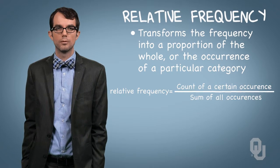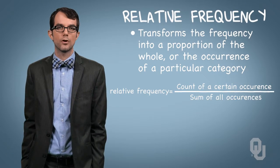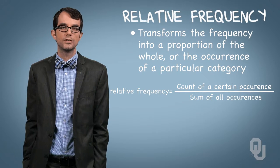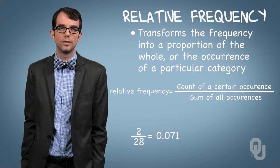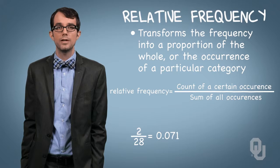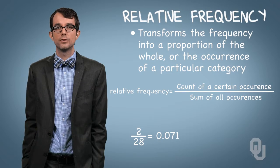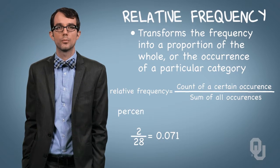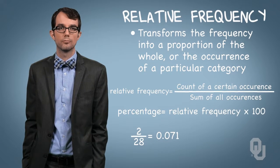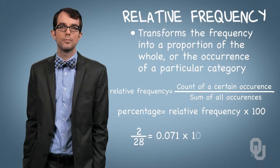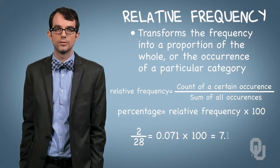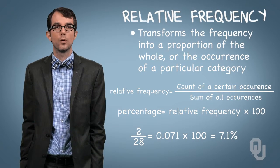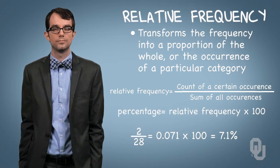For example, the relative frequency of earthquakes in 28 observations was 2 out of 28, or .071. Many folks find it easier to think in terms of a percentage, so multiplying the relative frequency by 100 provides that percentage — in this case 7.1%.